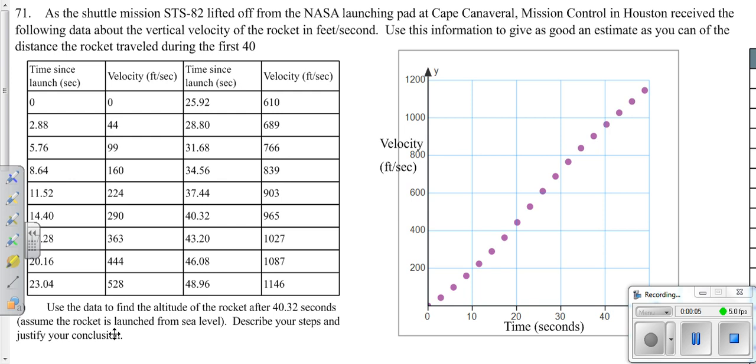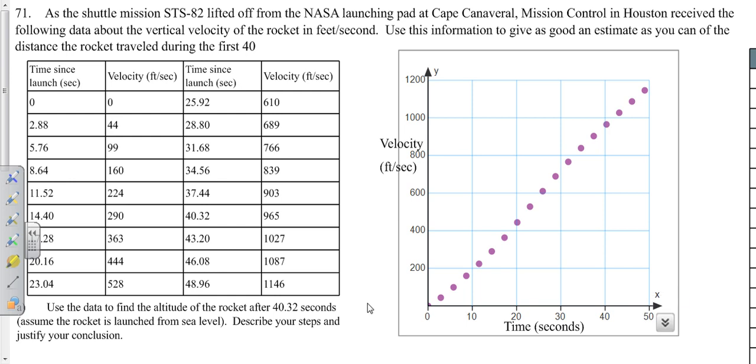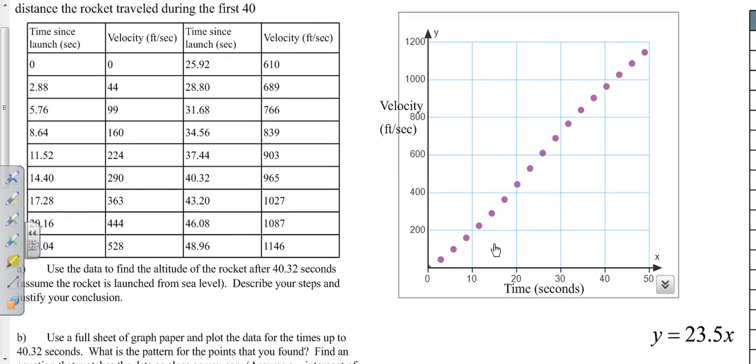On this problem, you're asked to find the altitude of a rocket. You're given time and velocity data. If you plot those points, you end up getting a velocity versus time graph. How do we find altitude? Altitude is the distance you're above the ground. Distance on a velocity-time graph is the area underneath your curve.